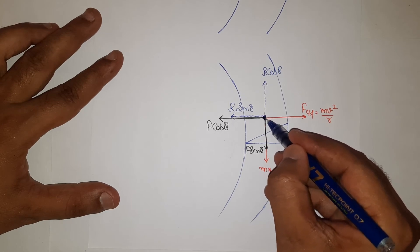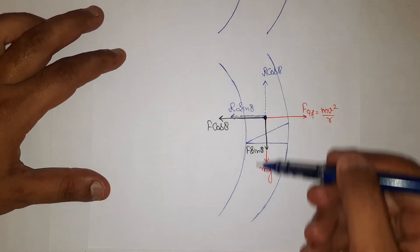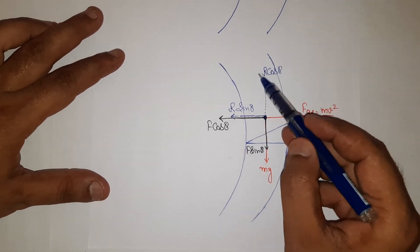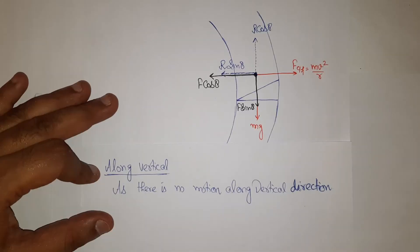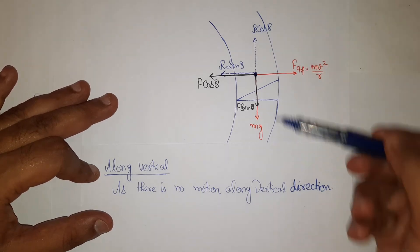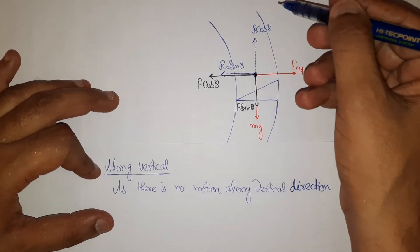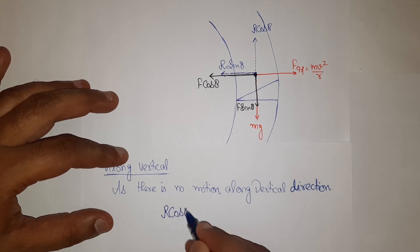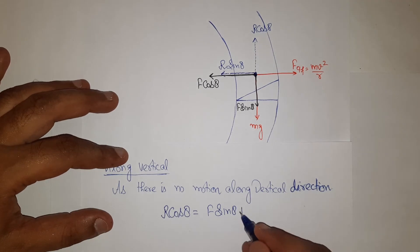If the center of mass is in equilibrium, the body will not skid radially outward. In the vertical direction there is no motion, so: R·cosθ = F·sinθ + mg.